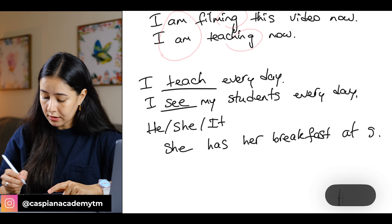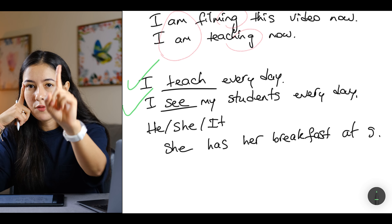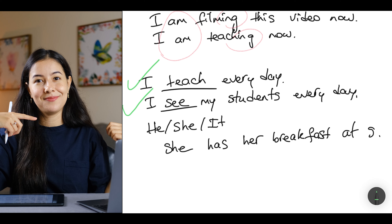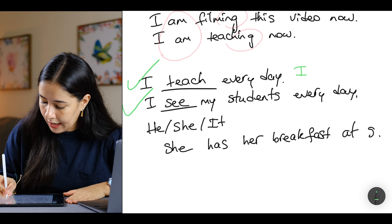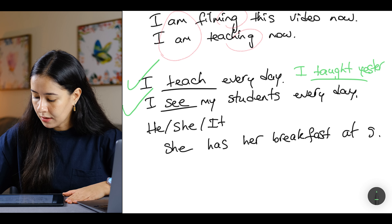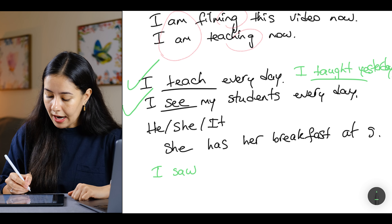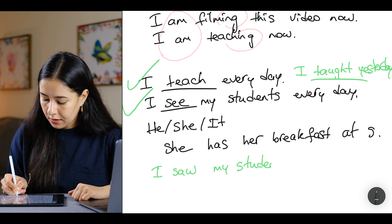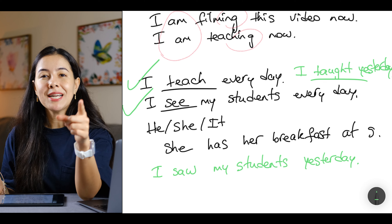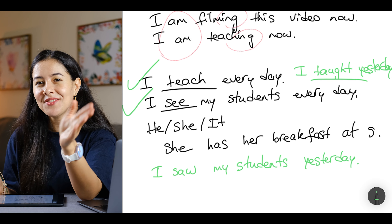Now, how can I change these sentences into the past? 'I teach every day' becomes 'I taught yesterday' — this is irregular. 'I see my students every day' becomes 'I saw my students yesterday' — also irregular. For negative: I didn't see my students. For question: Did you see your students yesterday? That covers negative and question form in past tense.